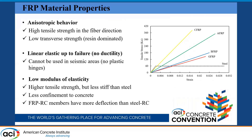FRP bars have different material properties. First, FRP bars are an anisotropic material — they have higher tensile strength in the fiber direction and lower strength in the transverse direction. Second, they are linear elastic up to failure; as you can see in the stress-strain curve, there is no yielding point compared to steel. Third, they have a low modulus of elasticity, which means concrete members reinforced with FRP bars have more deflection than steel-reinforced concrete members.